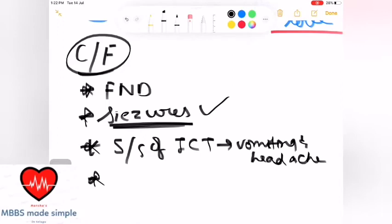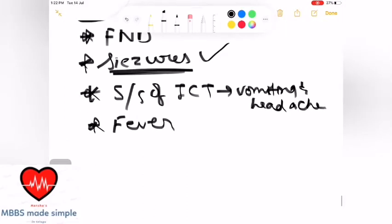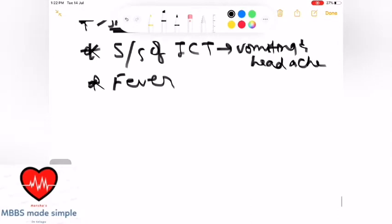Next is fever. Obviously, in any infection of the body, fever is very common. So when abscess forms, fever occurs. In particular: focal neurological deficit, brain infection causes seizures, intracranial tension increases causing vomiting and headache.